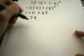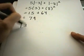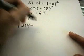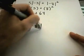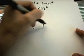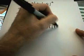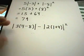Maybe one more absolute value problem here. Suppose I have 3 times 4 minus 8, the absolute value of that, minus 2 times 1 plus 4, absolute value of that, all squared.